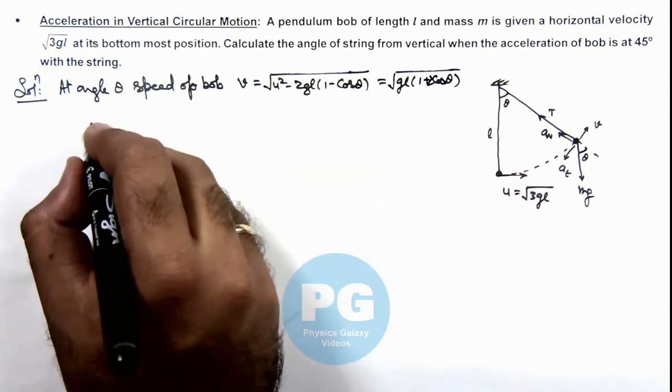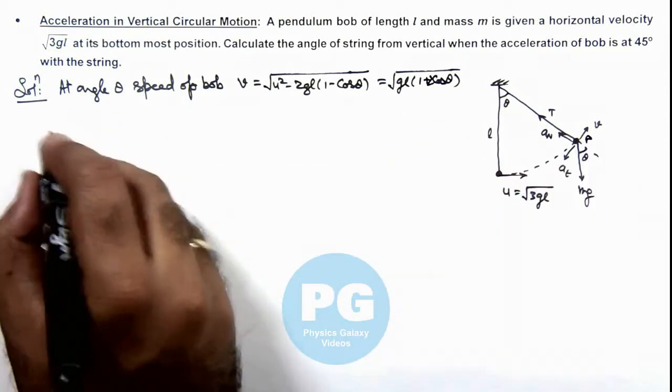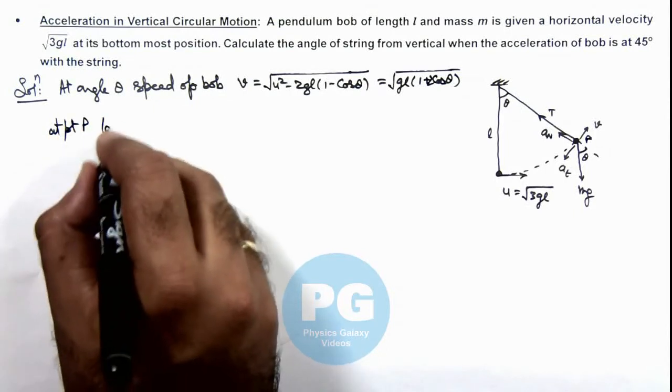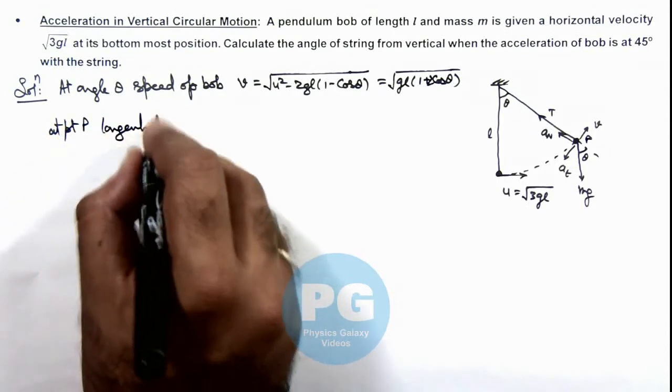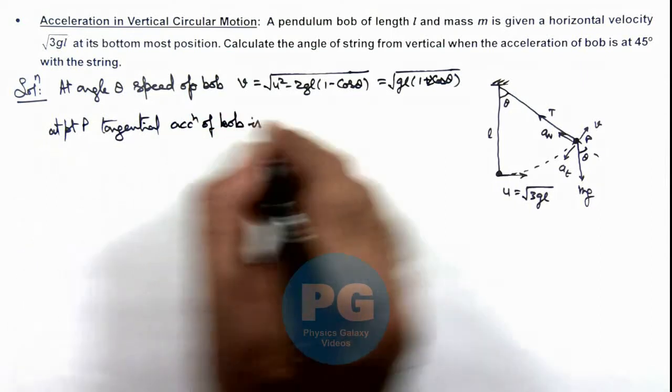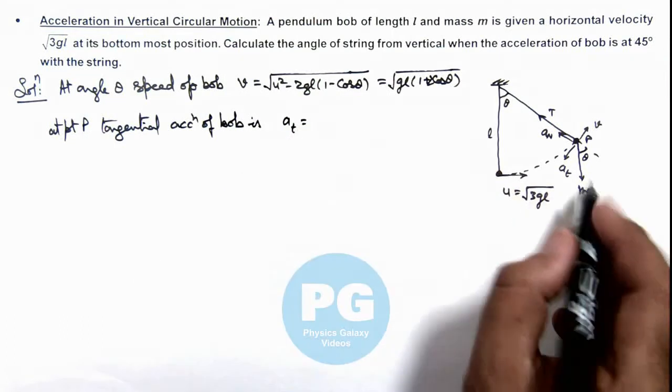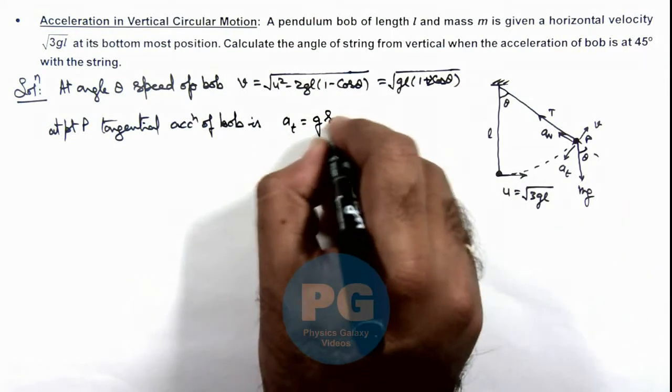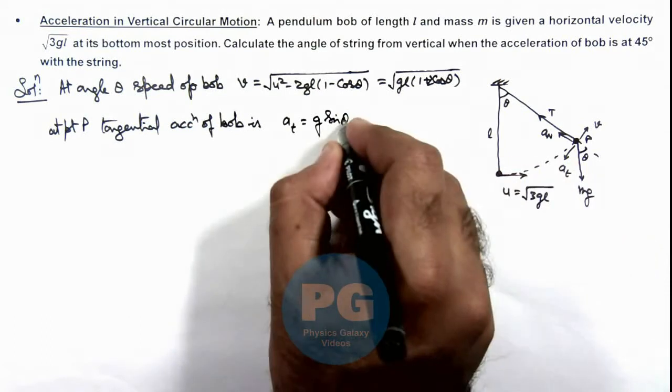At this point P, we can write tangential acceleration of bob is ay tangential. As it is only due to mg sin θ, this can be given as g sin θ, as it is tangential force upon mass.